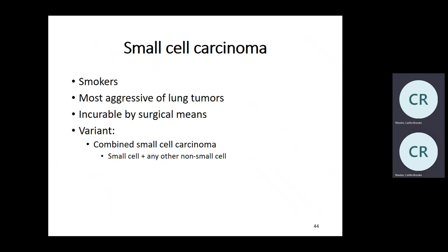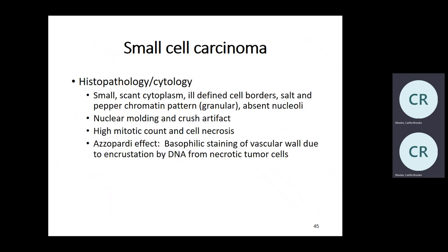Small cell carcinoma: you don't make this diagnosis in non-smokers — these are heavy smokers. Most aggressive lung tumors; five-year survival is about 15%. Histologically: scant cytoplasm, ill-defined cell borders, salt-and-pepper granular chromatin, no nucleoli, nuclear molding (one nucleus hugging another), crush artifact (cells break easily), high mitotic figures, and cell necrosis.